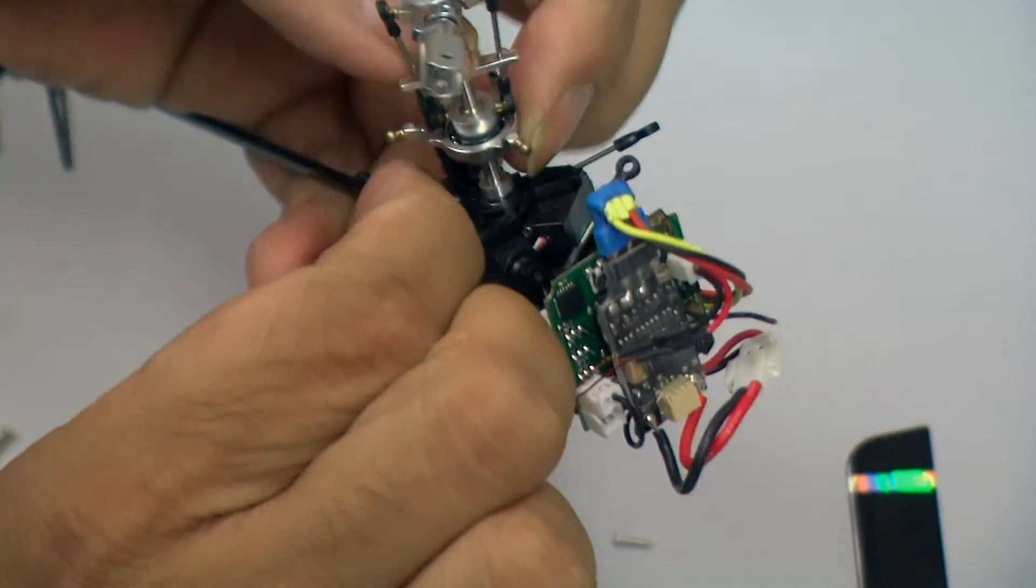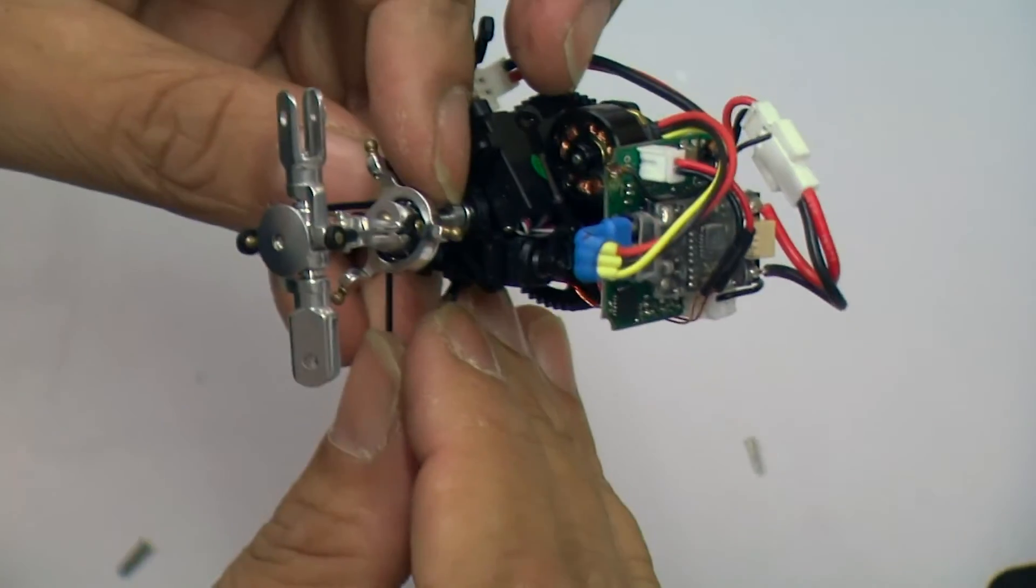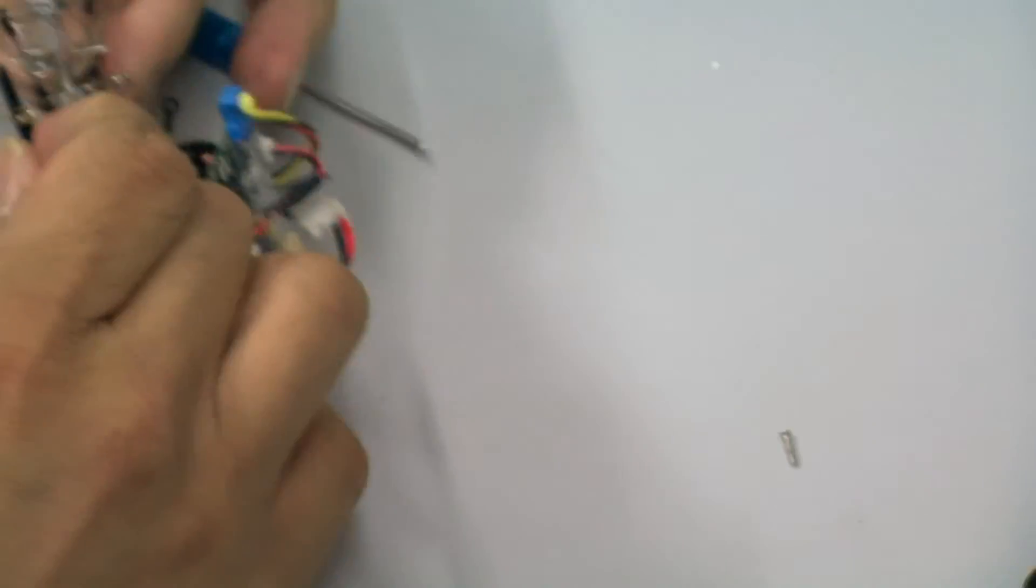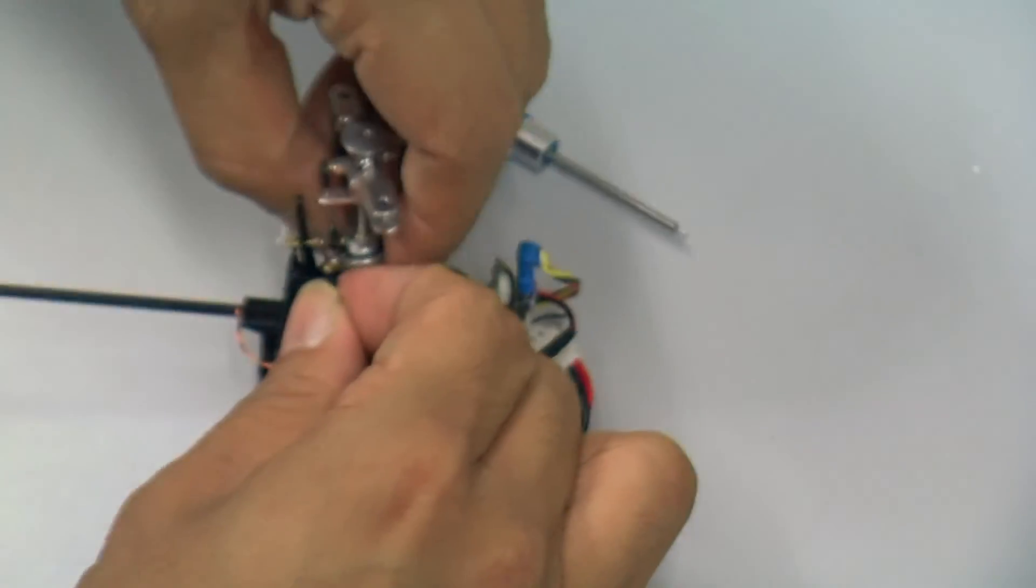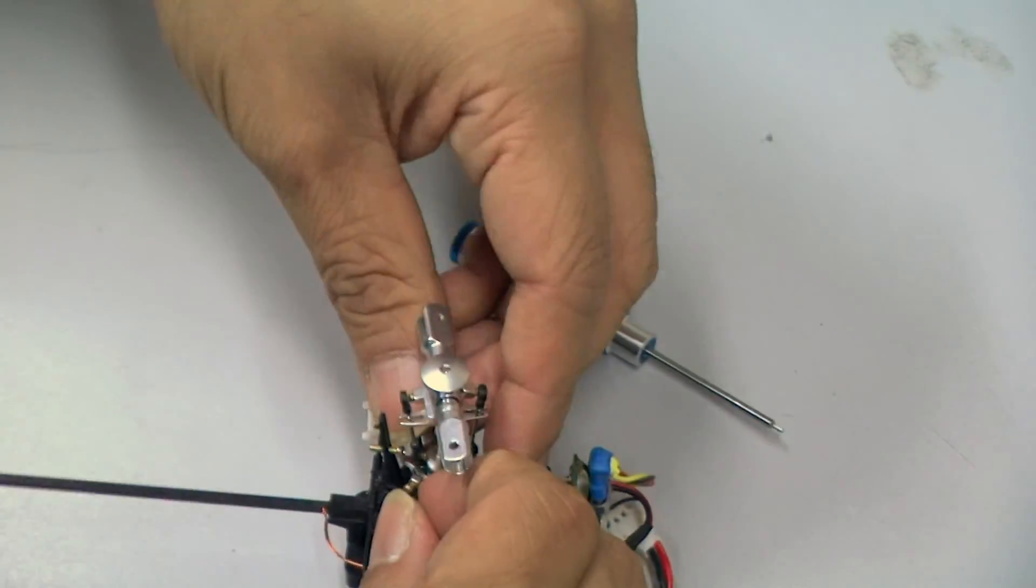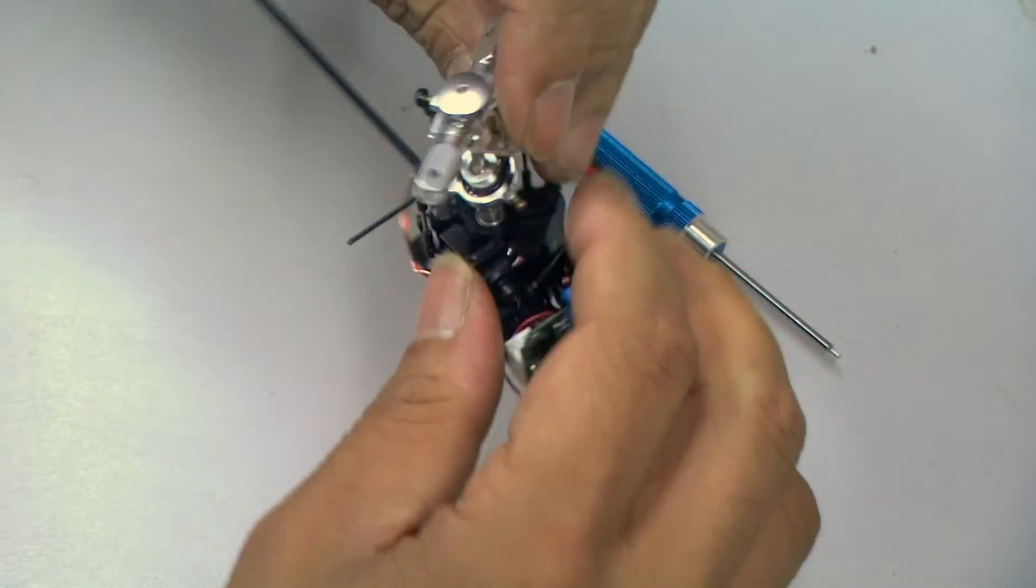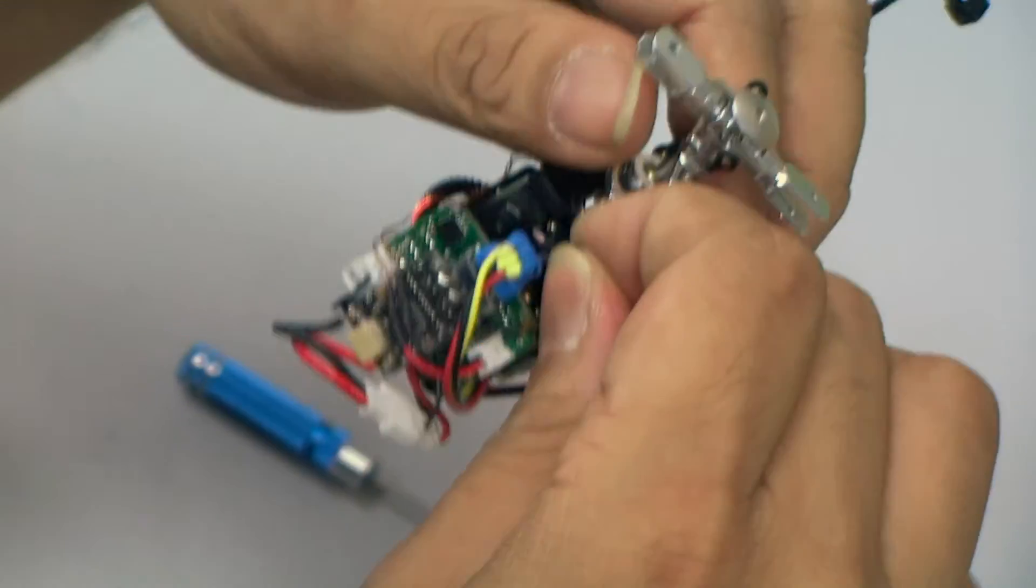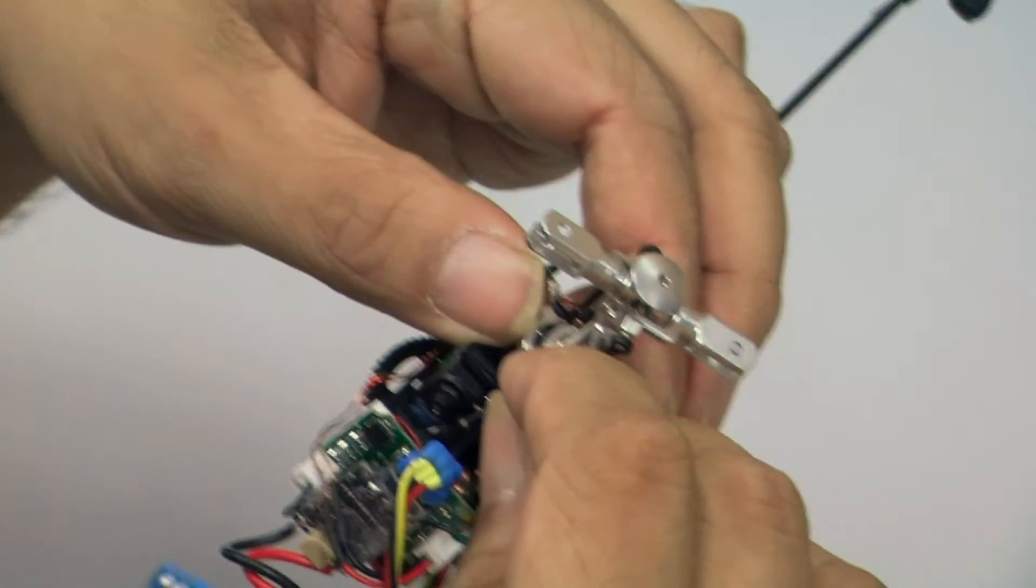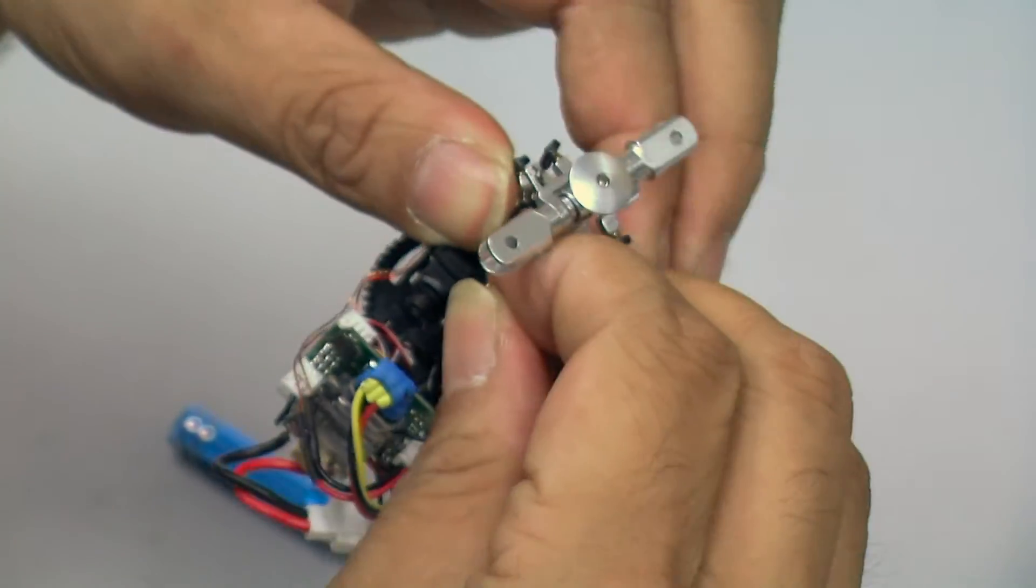There we go. Okay, and then just connect the linkage rod back to the swash plate. Let's see which side. Be careful not to damage the servo while pulling onto the servo horn. You will damage the little gears inside if you pull on it.